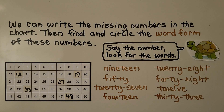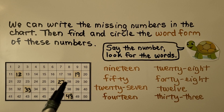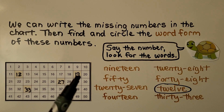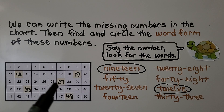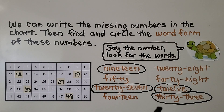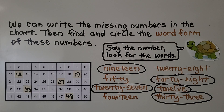Now we need to circle the word form of these numbers: twelve, nineteen, twenty-seven, thirty-three, and forty-eight. Do you see those numbers in word form? There's twelve — circle it. There's nineteen in word form, there's twenty-seven in word form, there's thirty-three down here, and there's forty-eight in word form.